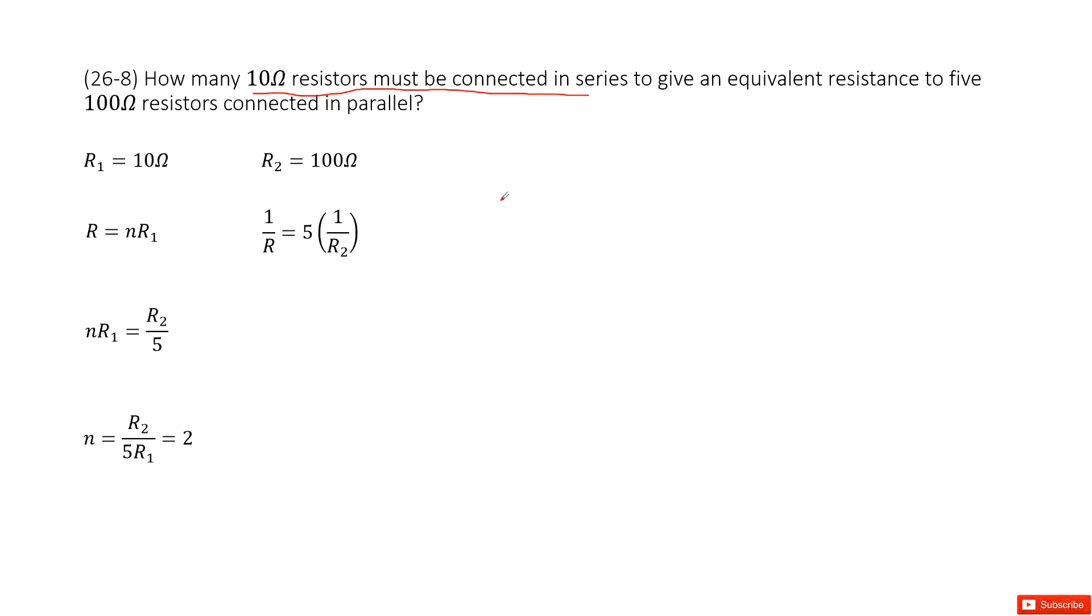And the resistor there is 10 ohms. This is R1, right? So there we can consider this is the number N resistors connected in series. So its equivalent resistance is just N times R1. Agree?